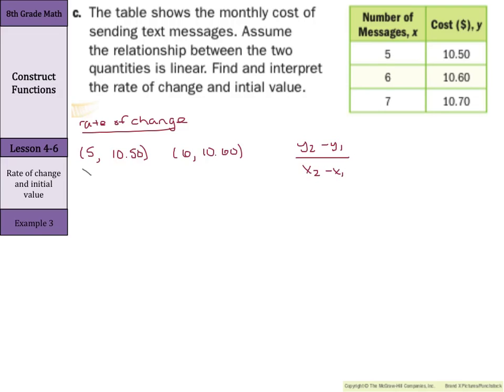You can label these points x1, y1, x2, y2, and you would have after you substitute in 10 dollars and 60 cents minus 10 dollars and 50 cents over 6 messages minus 5 messages. 10 dollars and 60 cents minus 10 dollars and 50 cents is 10 cents, and 6 minus 5 is 1.